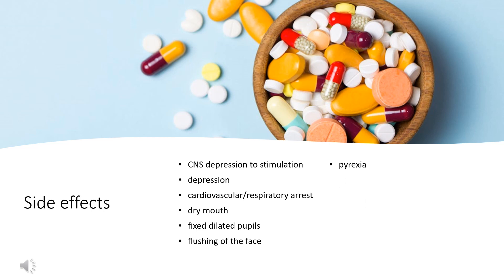Side effects: Overdosage symptoms are paradoxical, ranging from CNS depression to stimulation. Stimulation is most common in children and is usually followed by excitement, hallucinations, ataxia, loss of coordination, muscle twitching, athetosis, hyperthermia, cyanosis, convulsions, tremors, and hyperreflexia. This may be followed by postictal depression and cardiovascular/respiratory arrest.